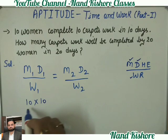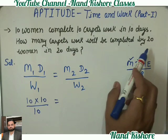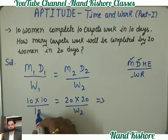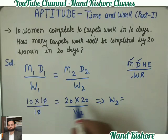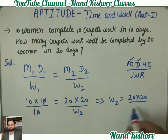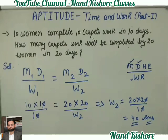M1 = 10 women, D1 = 10 days, W1 = 10 carpets. M2 = 20 women, D2 = 20 days, W2 = ? (कितने carpets complete होंगे). Solving: 10 × 10 / 10 = 20 × 20 / W2. Zeros cancel, cross multiplying: W2 = 20 × 20 / 10 = 40. So 20 women in 20 days will complete 40 carpets. I hope आपको समझ आया होगा।